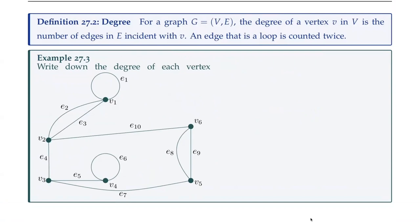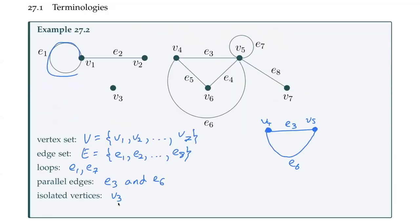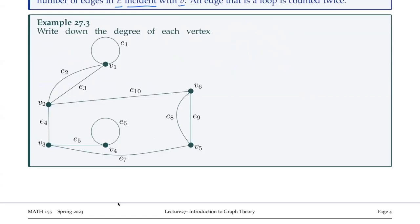The next terminology we need to think about is degree — the degree of a vertex in a graph. If we have a vertex, little v, in our vertex set, capital V, it is the number of edges in E that are incident — that means that join up with our vertex v. An edge that is a loop is counted twice.